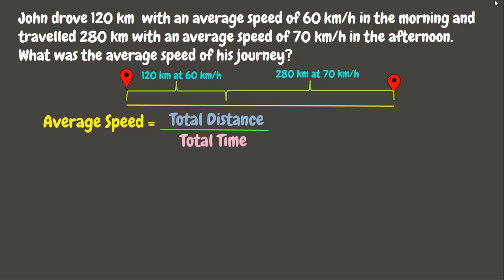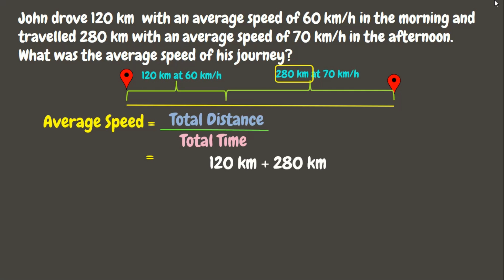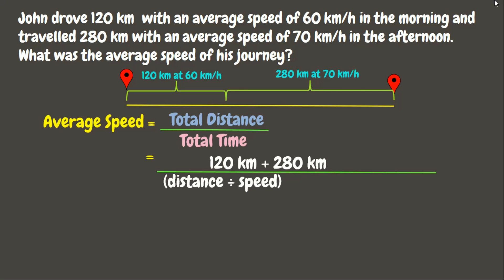To solve for the average speed, we divide the total distance traveled by the total time consumed. First, let's get the total distance by adding up all distances: 120 kilometers plus 280 kilometers. Next, let's get the total time. The times are not given in the problem, so let us solve for them first. To solve for time, we divide the distance by the speed. For the first given: 120 kilometers divided by 60 kilometers per hour.